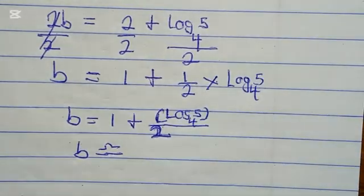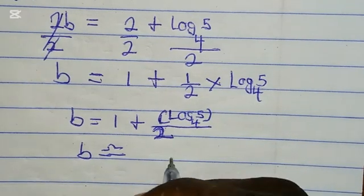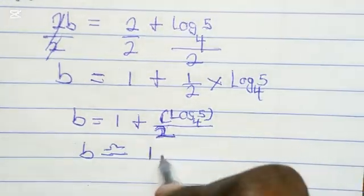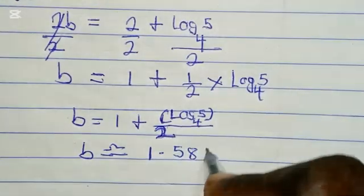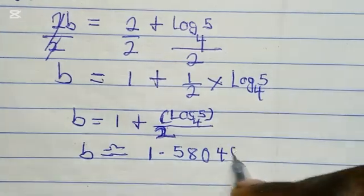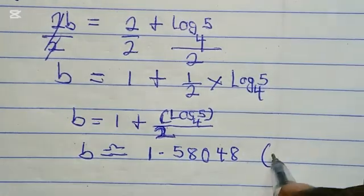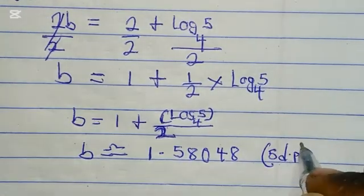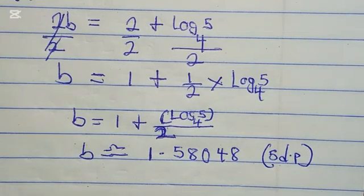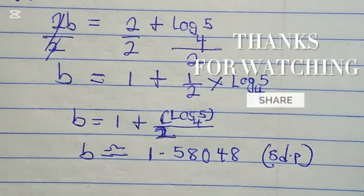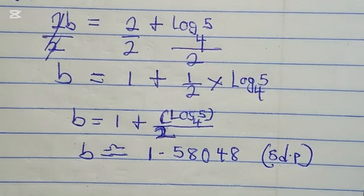This is approximately... let me check my calculator. This is approximately 1.58048 to five decimal places. So this is the value of b. Please don't forget to like, share, and subscribe. Bye bye, love you!